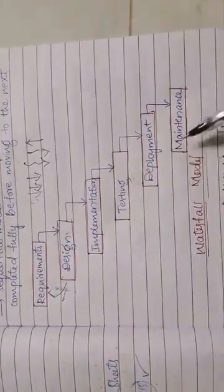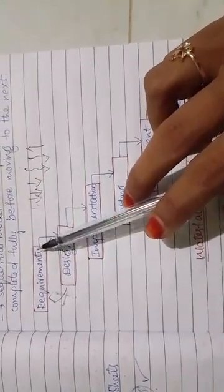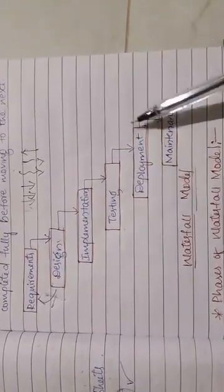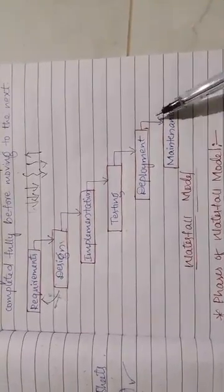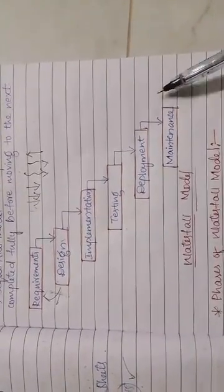There are six steps. First is requirements — take the requirements from the user. Second is design. Third is implementation — coding happens here. Fourth is testing — unit testing and integration testing. Fifth is deployment. After deployment you deliver to the end user or client, and they check and test it. Sixth is maintenance, which happens after deployment.